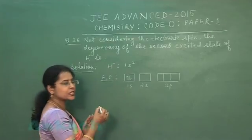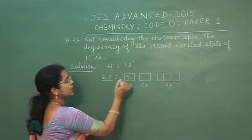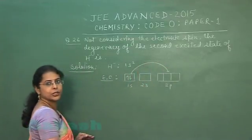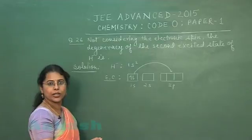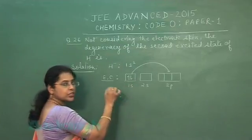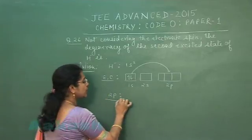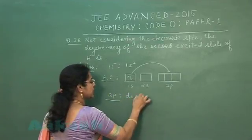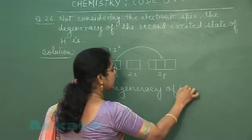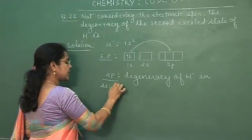So the second excited state means the electron is excited from the 1s orbital to the 2p orbital. The 2p subshell has three degenerate orbitals, so the degeneracy of H⁻ in the second excited state is 3.